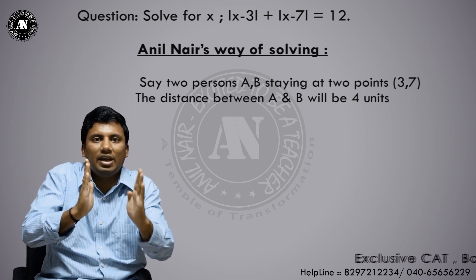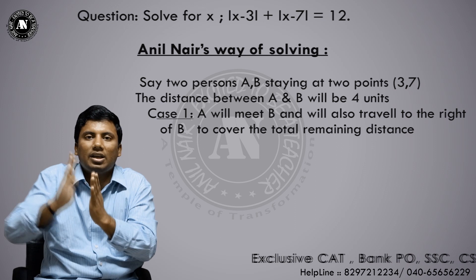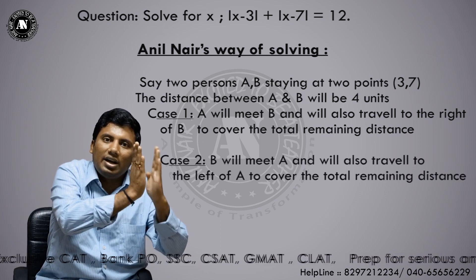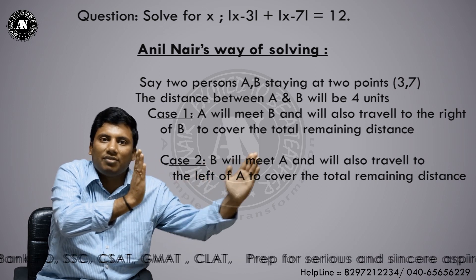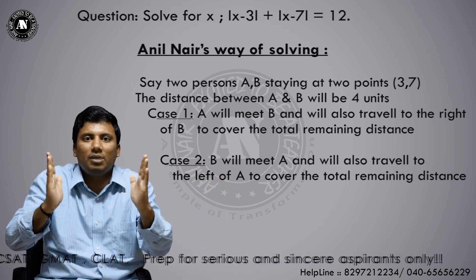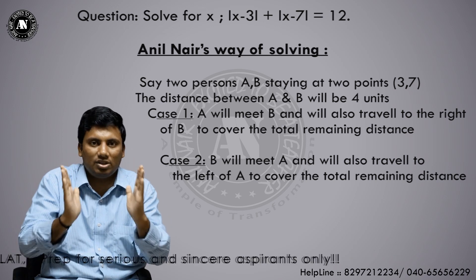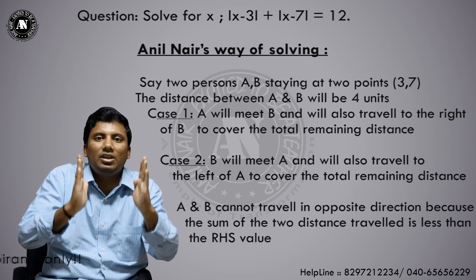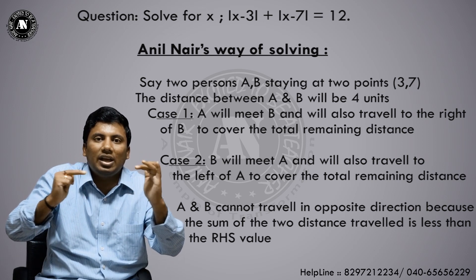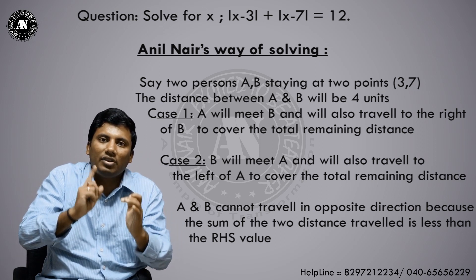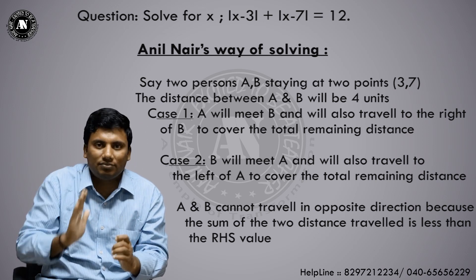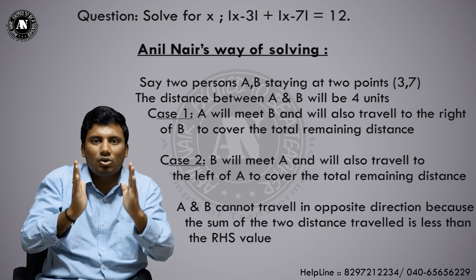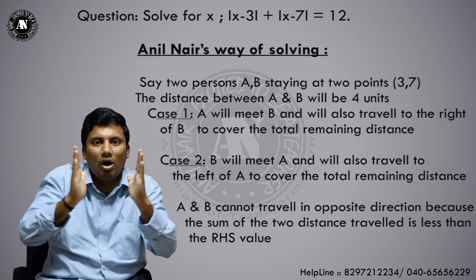There are 3 cases: A can come to B and then both go right; B can come to A and both go left; or A and B go in opposite directions. A and B cannot travel in opposite directions — because between 3 and 7, if they meet at any point, the total distance travelled will be 4. But according to the question it is 12, so opposite directions are ruled out.